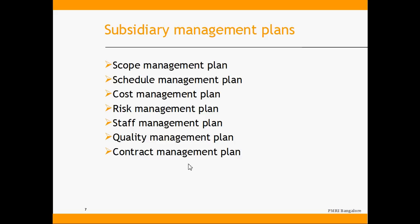For a small project, all these things may be in one single document. But for large projects like the Burj Khalifa — the tallest tower in the world — there are separate contracting, quality, and staffing departments, each with their own specialist plans. All these are integrated into one cohesive integrated project plan. This continuous integration of subsidiary plans into one cohesive integrated project plan is an ongoing process throughout the project, and is the major job of a classical project manager.